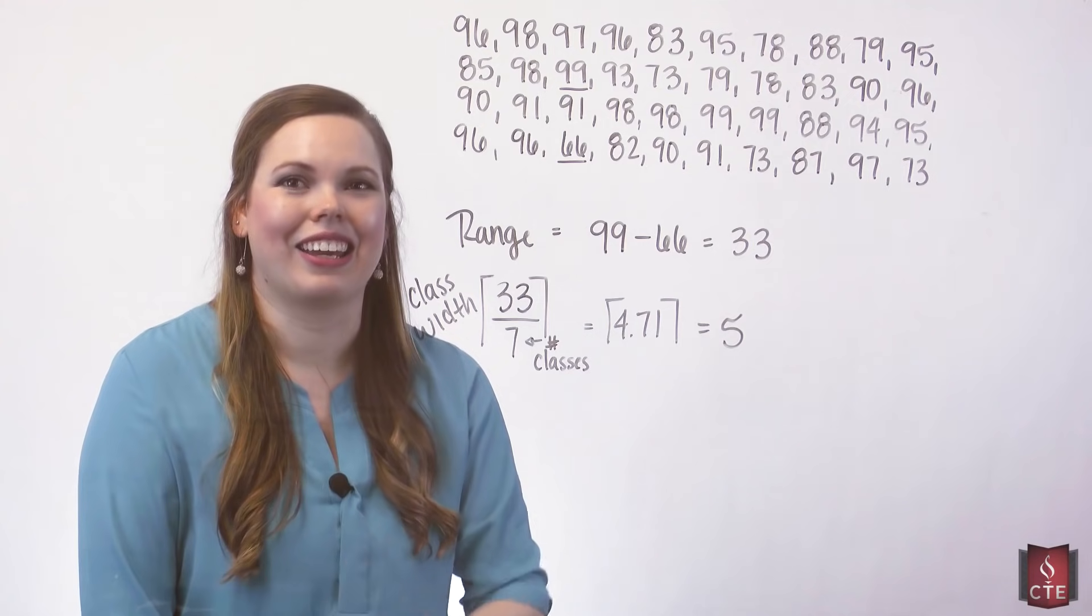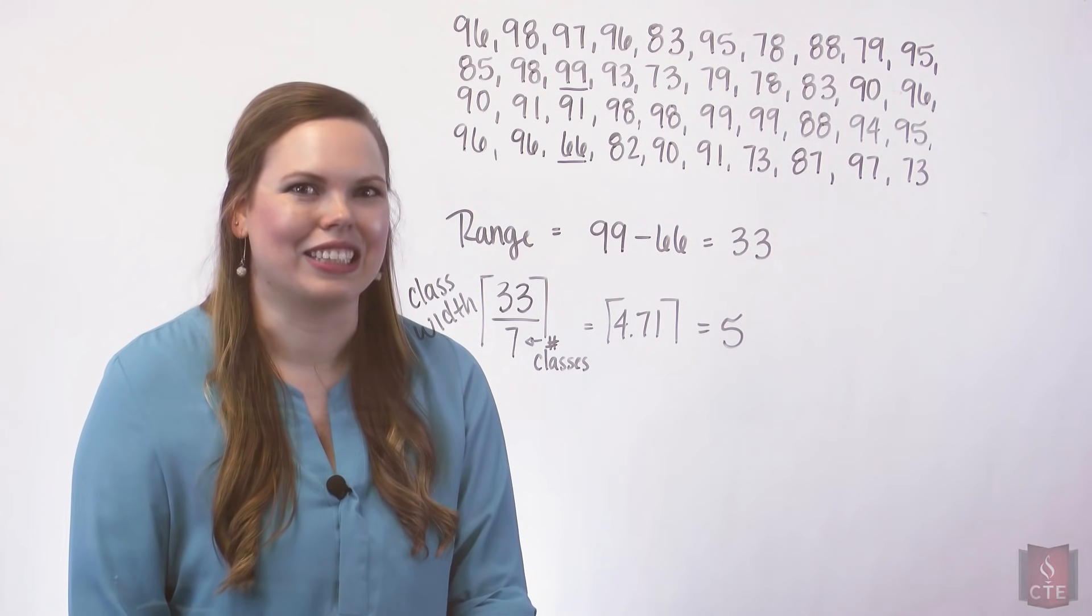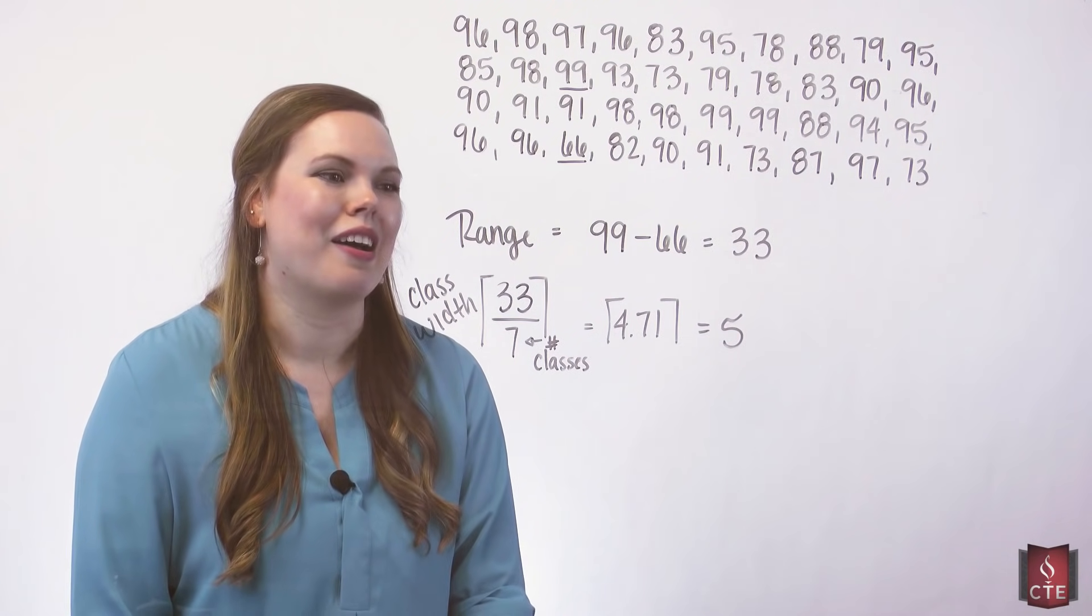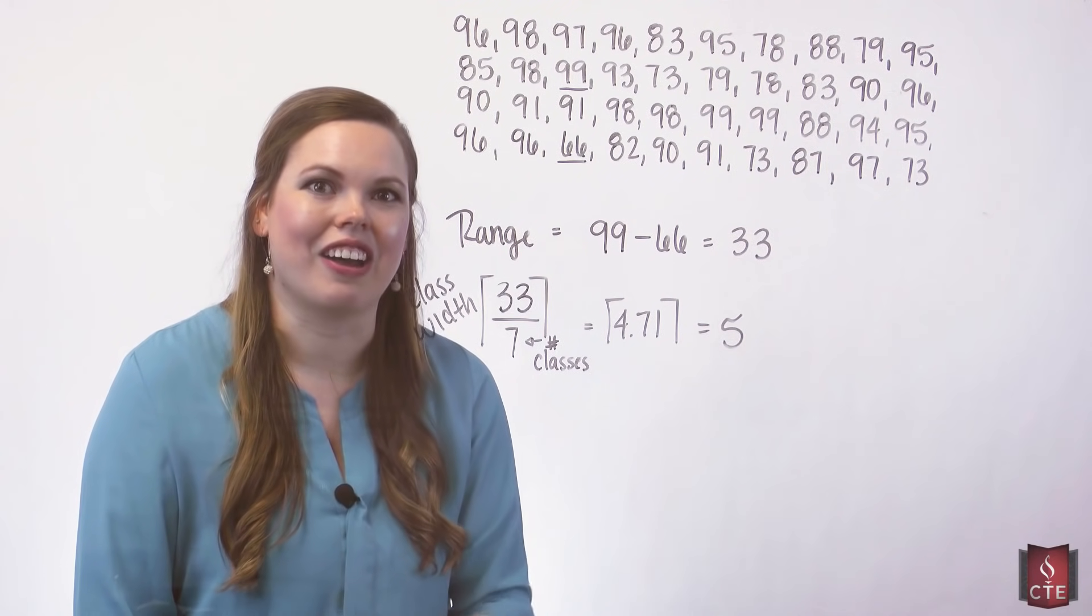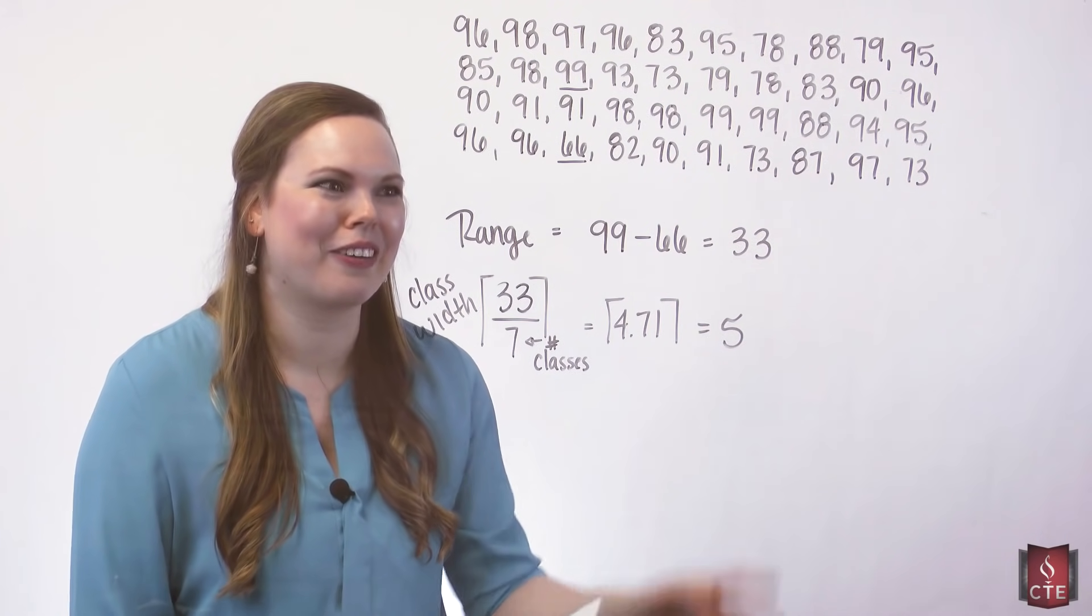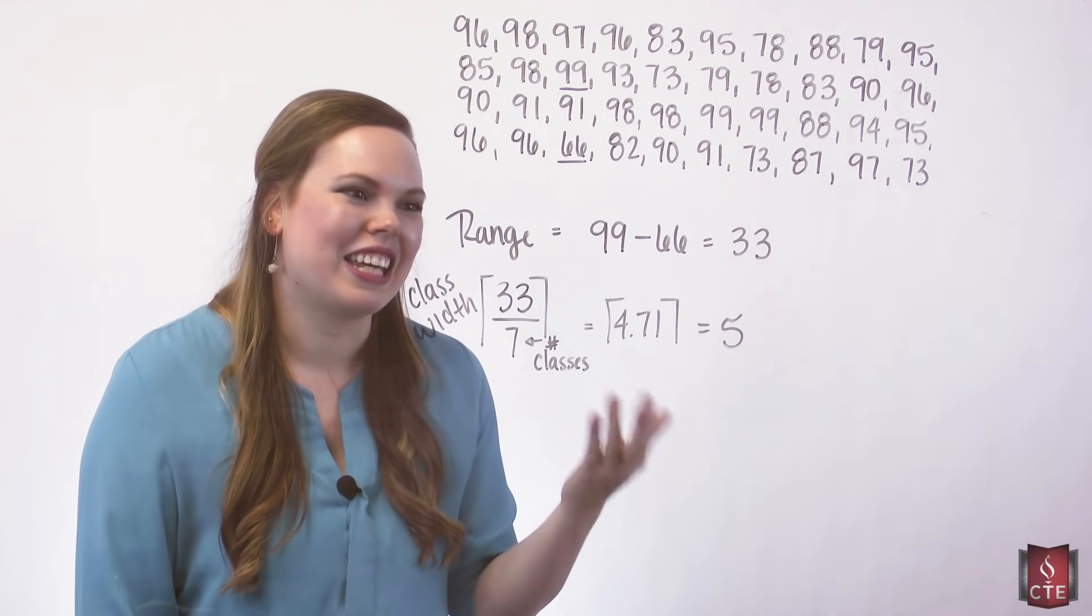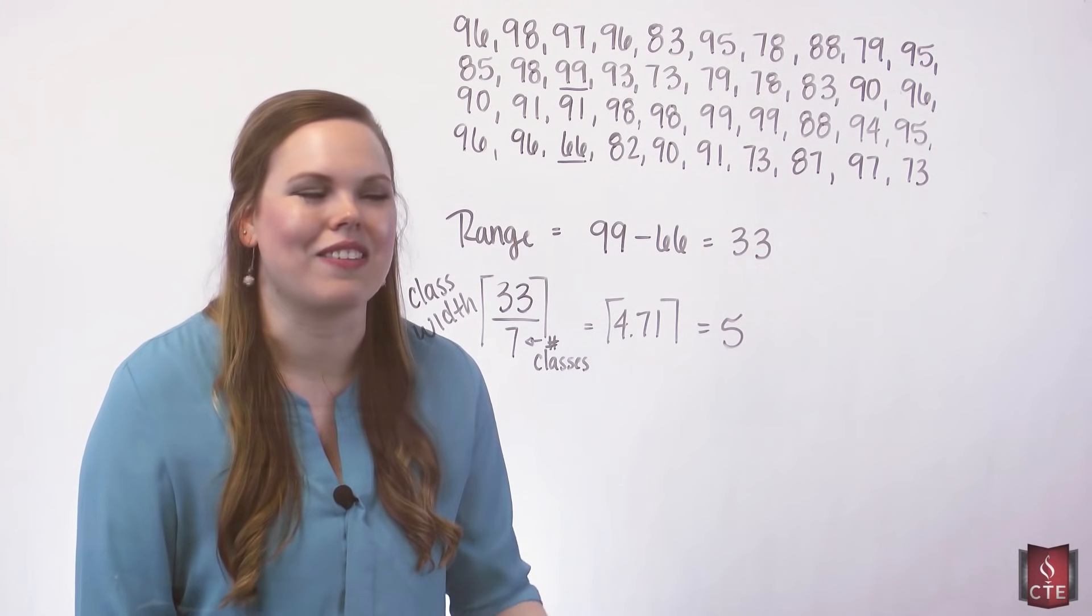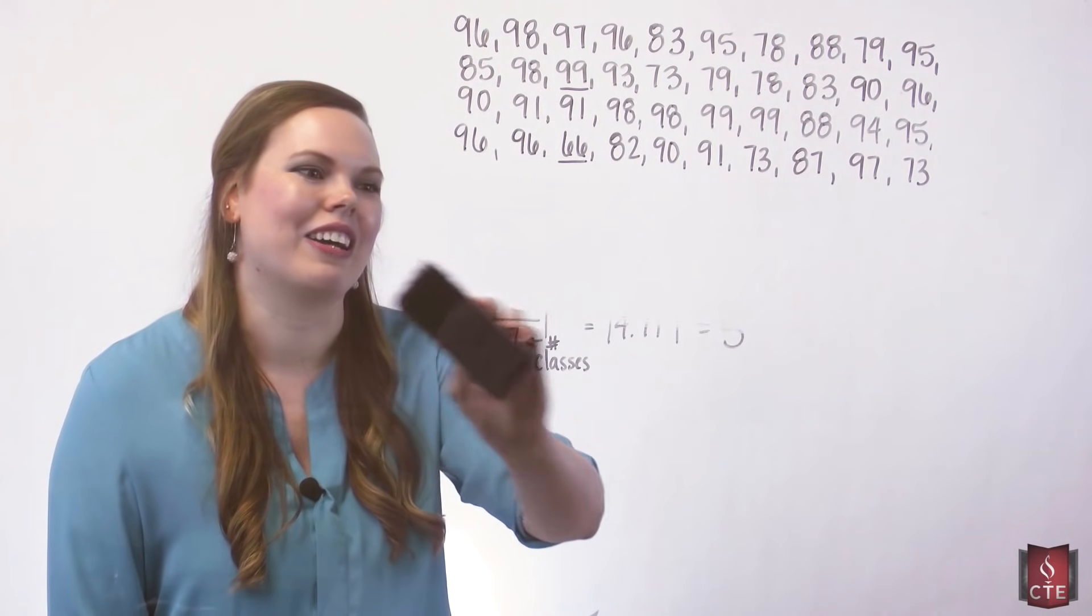And I like a class width of 5. It's odd. We like an odd class width because then our midpoint is a whole number. It's a reasonable value. I like having 5 data values and we just like the number 5. So I saw that quickly and I was like, 7 classes it is. 6, I think, gave us a 4, and that was a little bit small for a class width and it was an even number, so I went to 7. And that was what I decided on.